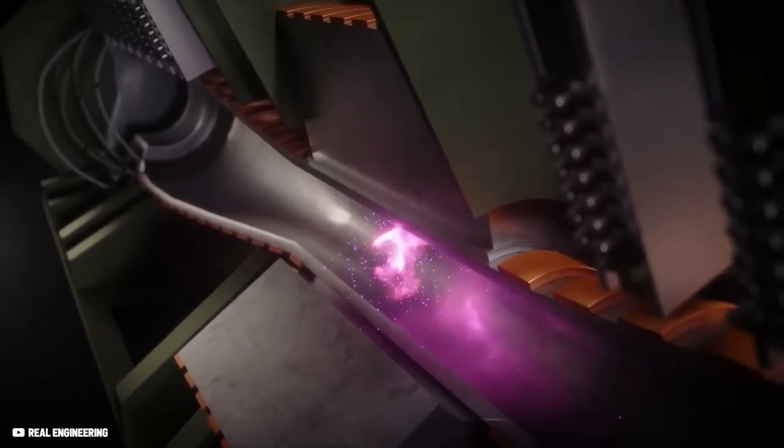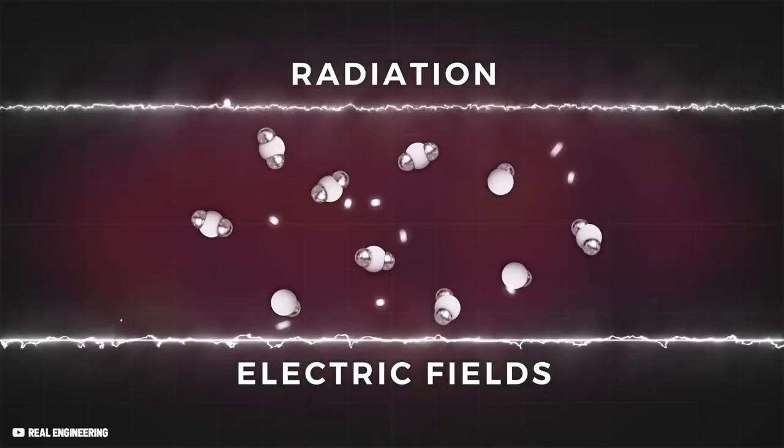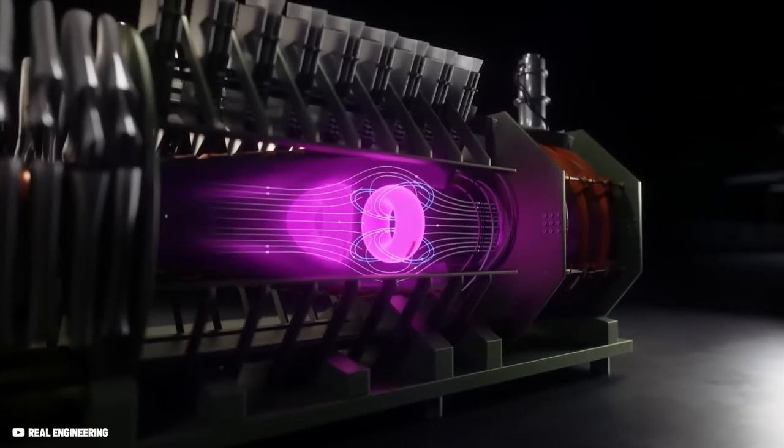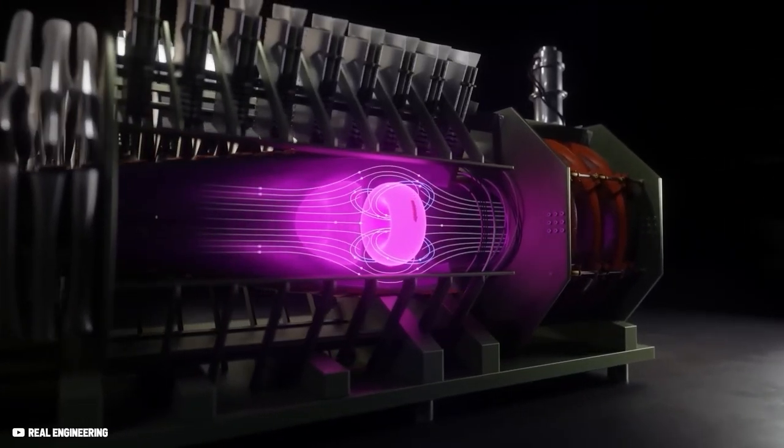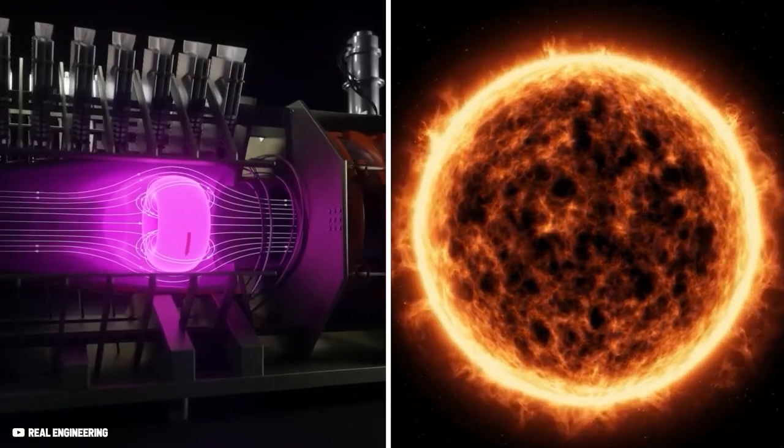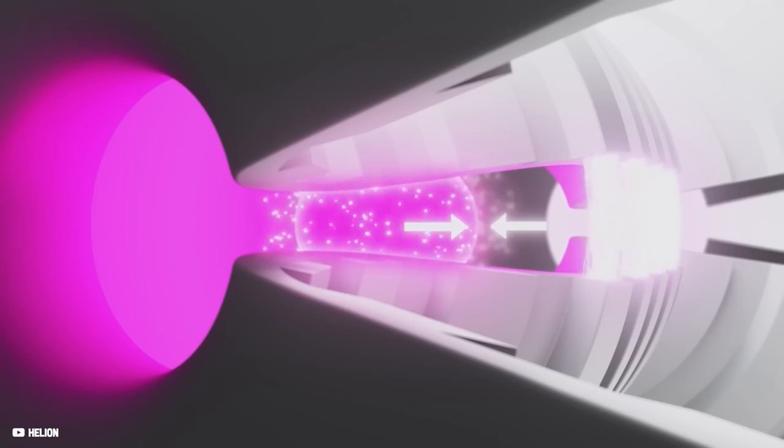This compresses the plasma, increases the density and pressure, until the plasma reaches temperatures exceeding 100 million degrees Celsius. At such temperatures, the atomic nuclei fuse to form helium, releasing energy in the process, similar to what occurs at the core of the Sun.